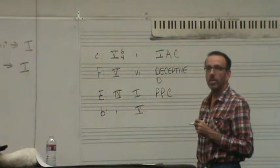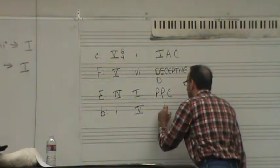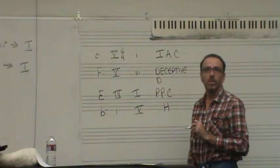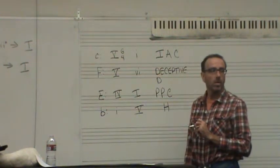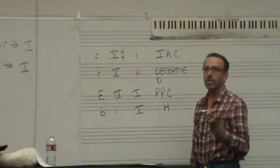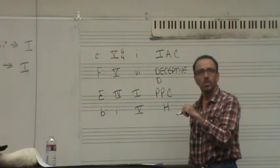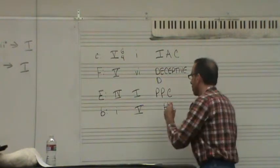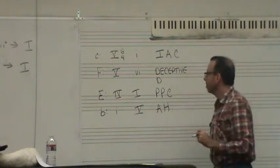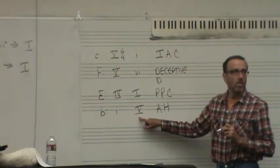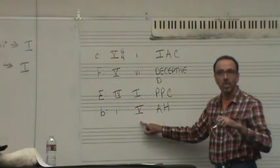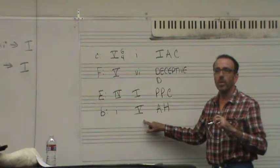So that would be? Half cadence. But what kind of half cadence? Is it authentic, phrygian, plagal? Authentic. Yeah, authentic half, because it involves 5. Remember, I said there's no perfect, but there is authentic or plagal or phrygian.